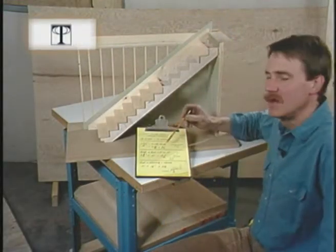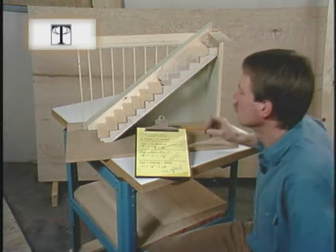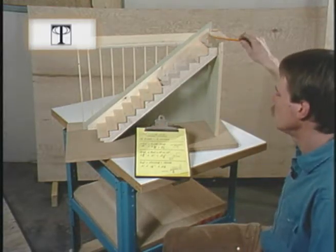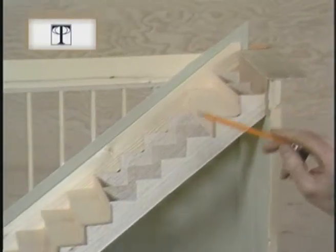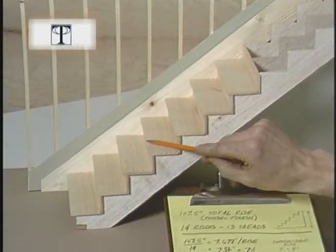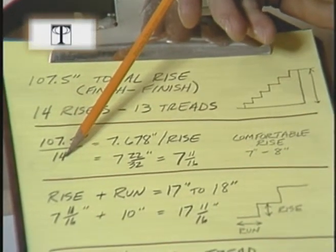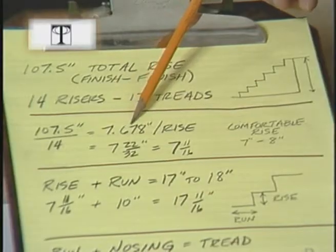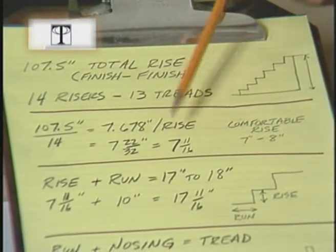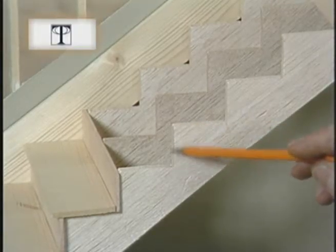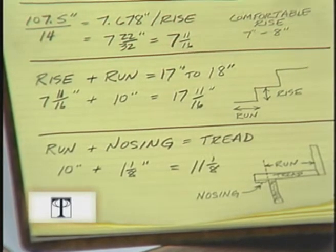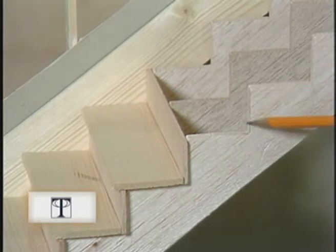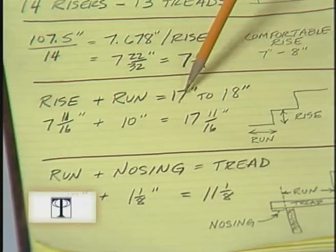Now let's do some calculations. I've written down our 107.5-inch measurement. In a house with a 9-foot floor-to-floor measurement, we'll normally have 14 risers. You'll note on our model that I start with a riser and end with a riser, so if I have 14 risers, I'll have 13 treads. Dividing 107.5 inches by 14 risers gives us 7.678 inches per rise, or 7 and 11/16 inches. This is a comfortable rise, falling between 7 and 8 inches. A rule of thumb says the rise plus the run should be between 17 and 18 inches — our rise of 7 and 11/16 inches plus a run of 10 inches falls between those two.